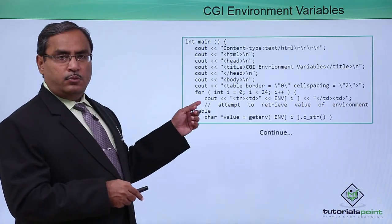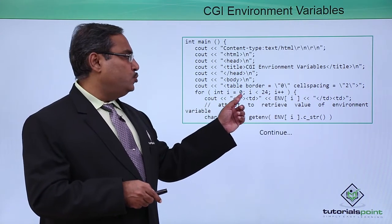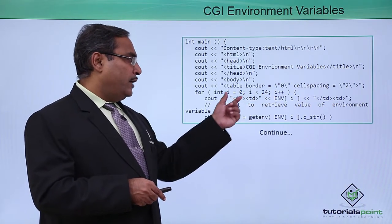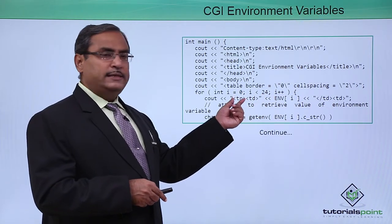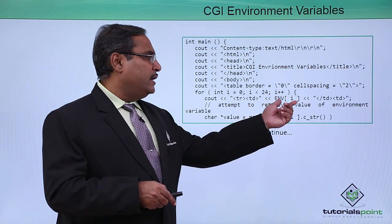Now in the main program we have written the respective code. Here you can find that i is ranging from 0 to 23, and within this limit, within these TR TD HTML tags, we are printing env[i].